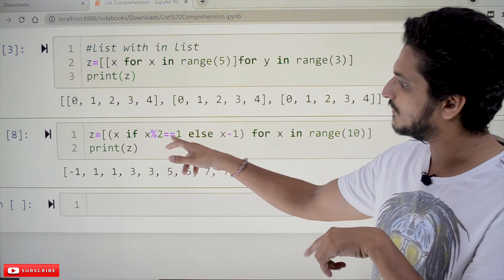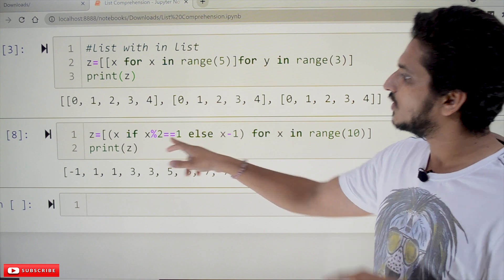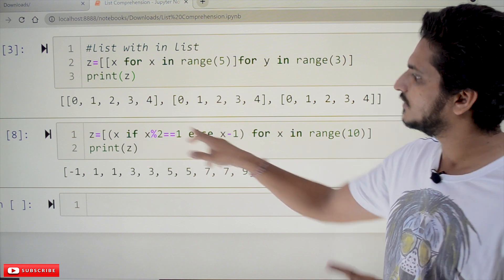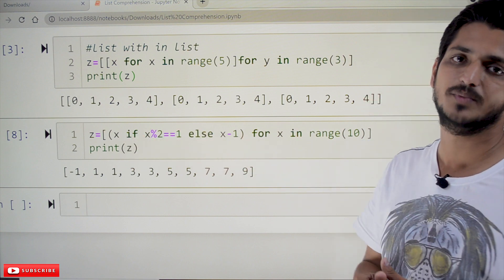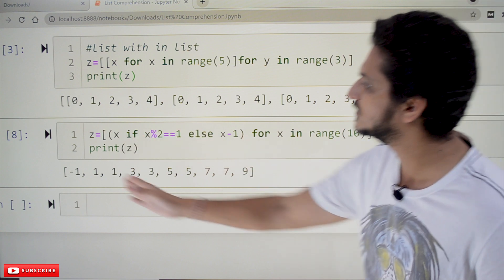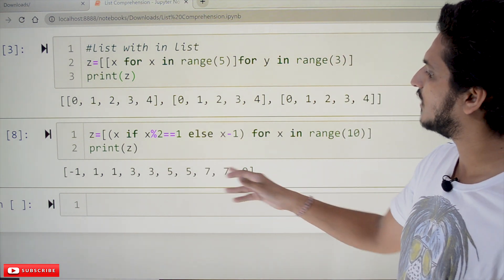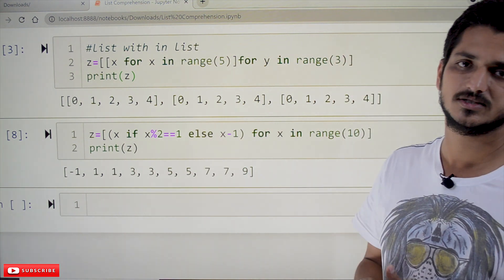if x mod 2 == 1, then display x. Else x-1 should be displayed. So, for that it is displaying -1, 1, 1, 3, 3, 5, 5, 7, 7, 9. This is how it is displaying.